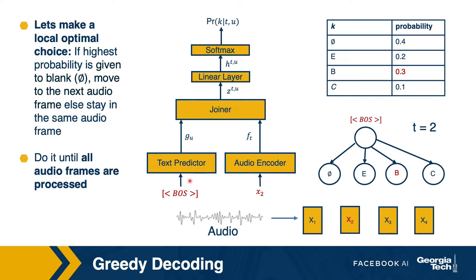My audio feature has become x2, whereas my text history is still beginning of the sentence. I pass the text history through the text predictor and get the text embedding. One thing to note is that since the text history has not changed, I can reuse the text embedding from the previous step rather than recomputing it. Now I have the text embedding, and the audio features corresponding to frame 2 are passed through the audio encoder to get the audio embedding. Taking the audio embedding and text embedding and passing through the joiner — since the audio embedding has changed, the probability distribution would also change.